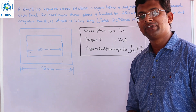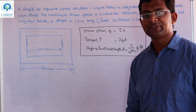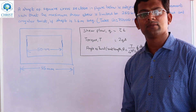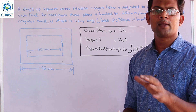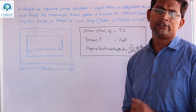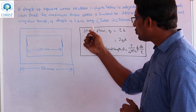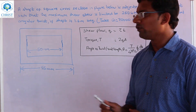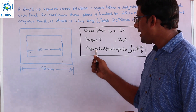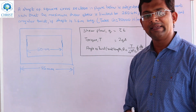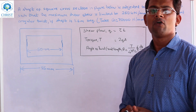In the previous video, we covered torsion of thin-walled tubes. We have two problems here which are very easy and very important. To solve these problems, we have three equations: the shear flow, the torque T, and the angle of twist per unit length. These three equations are very helpful.